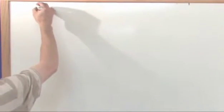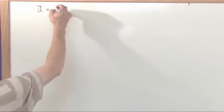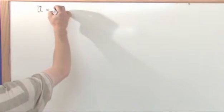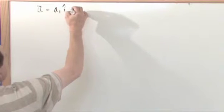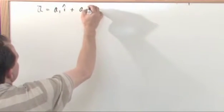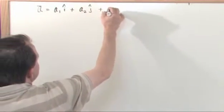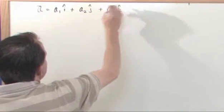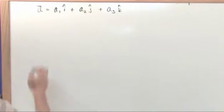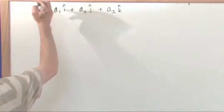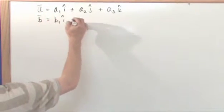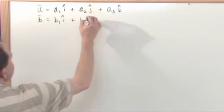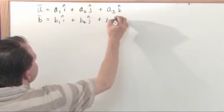So if you had a vector a, the same vector we've always been talking about, and we said that that vector had a component a sub 1 in the x direction, and we said it had a sub 2 in the y direction, and we said it had a sub 3 in the z direction, i, j, k, x, y, z. That's a vector. And let's say we had another vector b, that was b1 in the i direction, b2 in the j direction, and b3 in the k direction.